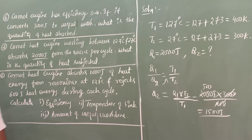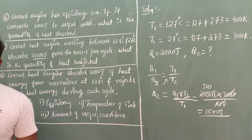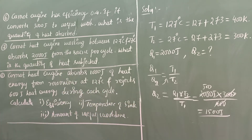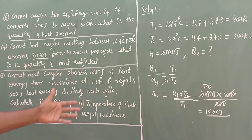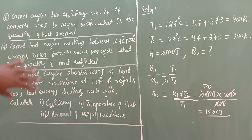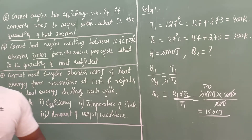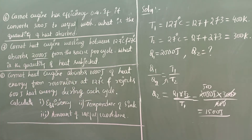So the amount of heat sent to the sink is 1500 Joules. That is the required solution for question number seven. Please verify the calculation with your calculator and let me know if you get a different answer.